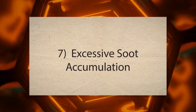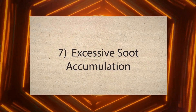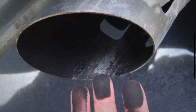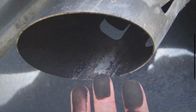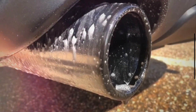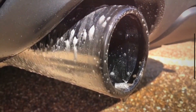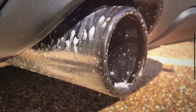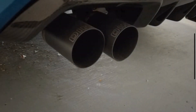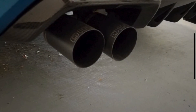7. Excessive Soot Accumulation: In diesel engines, excessive soot buildup in the exhaust system can obstruct the flow of exhaust gases and interfere with the operation of the downstream oxygen sensor. This can lead to inaccurate readings and trigger the PO-141 code.